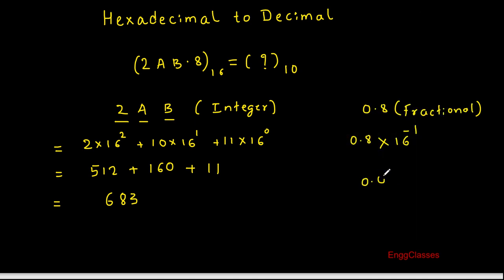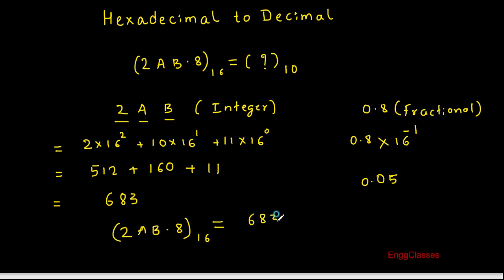So 0.05 is the answer for the fractional part. Therefore, 2AB.8 to the base 16 is equal to 683.05 in decimal. This is how we convert a given hexadecimal number into its equivalent decimal number.